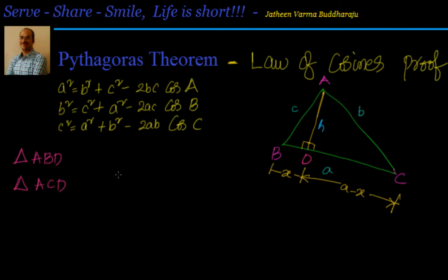From triangle ABD we know h² = c² - x². From triangle ACD, I know h² = b² - (a - x)².